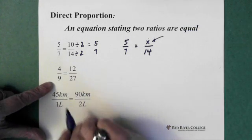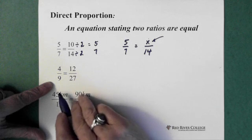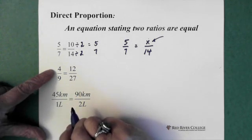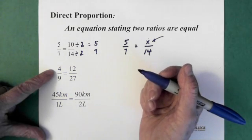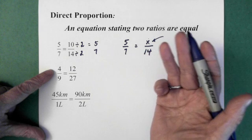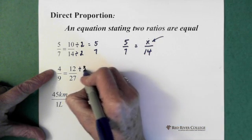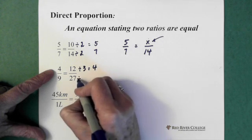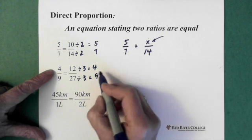Here's another direct proportion equation. Two ratios that equal one another. And again, sometimes it's not really obvious right off the bat, but we can look at this and say, what are they both divisible by? And they're both divisible by 3. So if we divide this by 3, we end up with 4. And we divide this one by 3, we end up with 9. So there you go, 4 over 9.